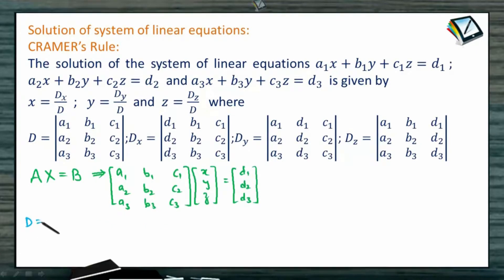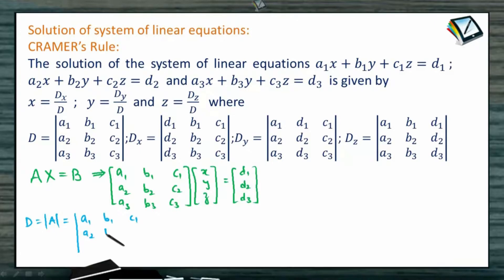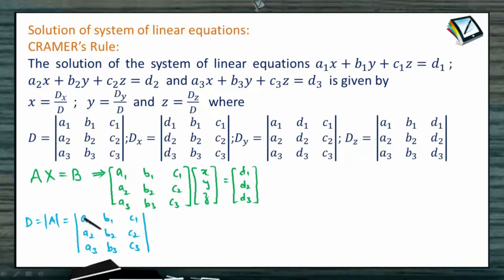Now in the case where we have a matrix equation of the form A·X = B, let's consider D as the determinant of matrix A — that is, the determinant of a1, b1, c1, a2, b2, c2, a3, b3, c3. D denotes the determinant of the coefficient matrix of the given system of equations.